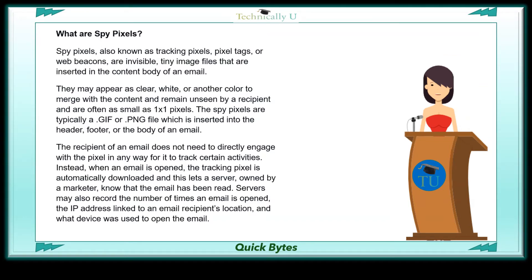Spy Pixels are typically a GIF or PNG file which is inserted into the header, footer, or the body of an email. The recipient of an email does not need to directly engage with the pixel in any way for it to track certain activities.